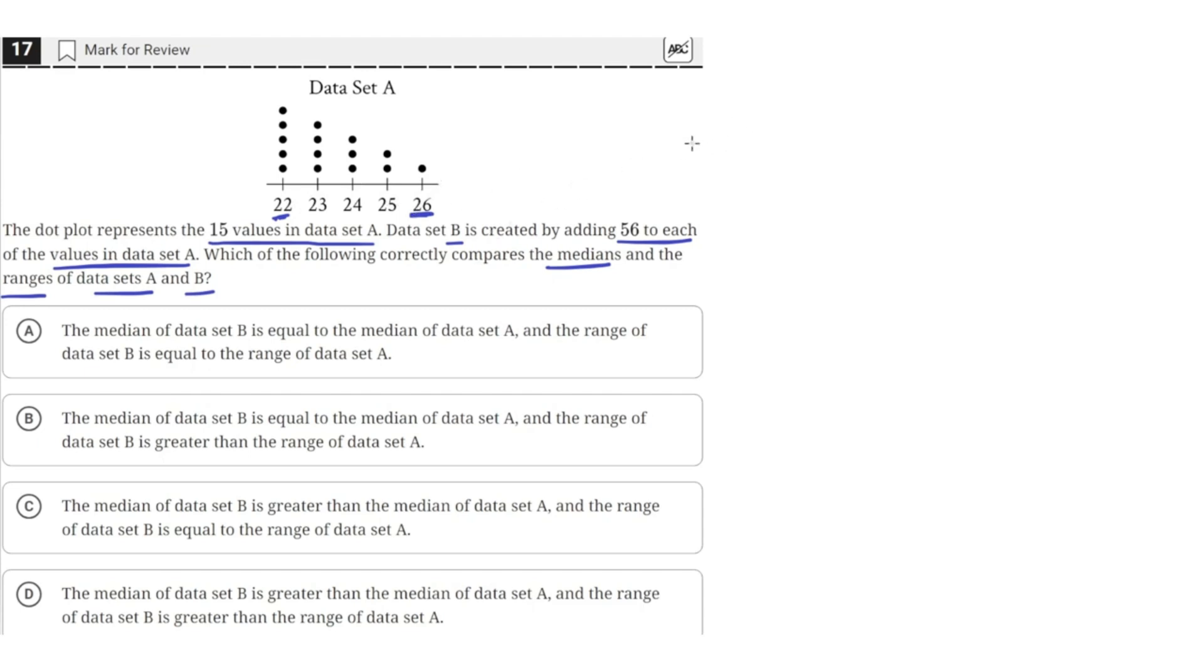So that means the range will still be the same because we're adding 56 to every single value. And the range is equal to the maximum value minus the minimum value. But if we're just adding 56 to both of these, then the difference between them will still remain the same. The difference between them will still be 4. So the range will be the same, and we can rule out any answer choice that says the range is not the same.